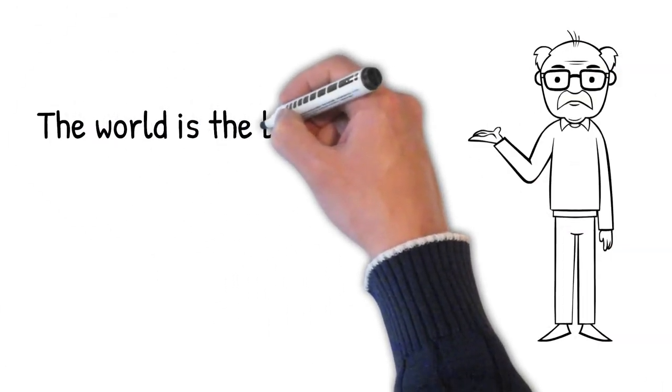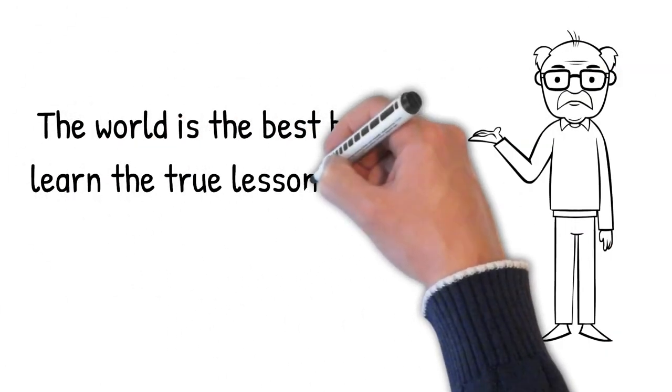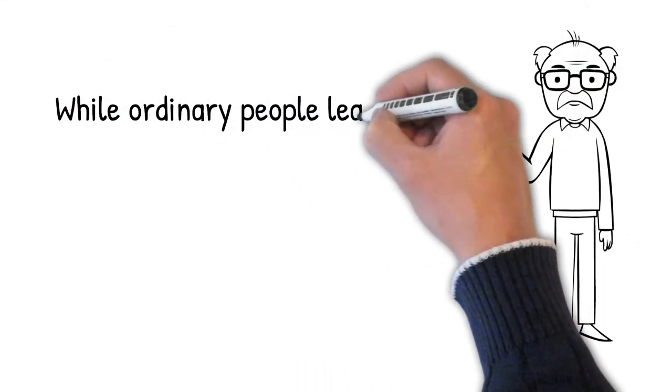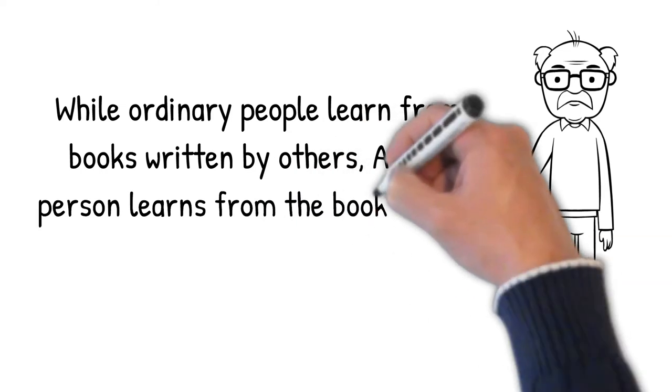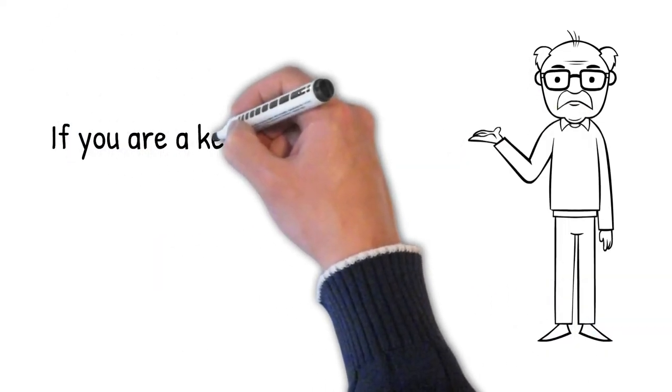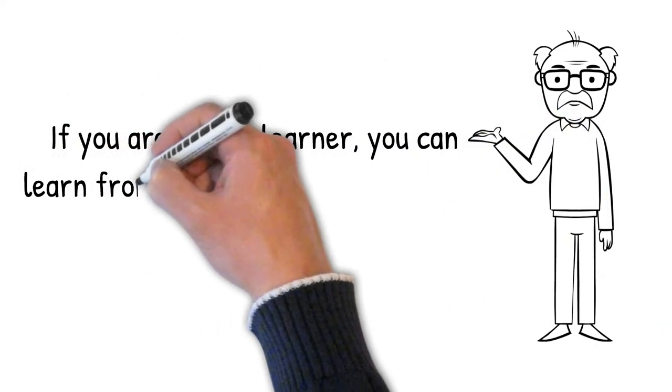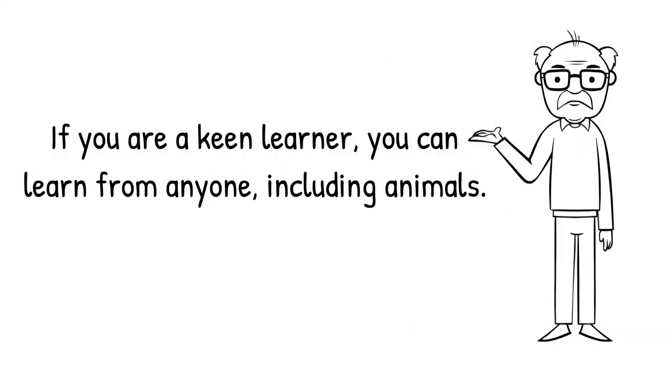The world is the best book to learn the true lessons of life. While ordinary people learn from books written by others, a wise person learns from the book of life. If you are a keen learner, you can learn from anyone, including animals.